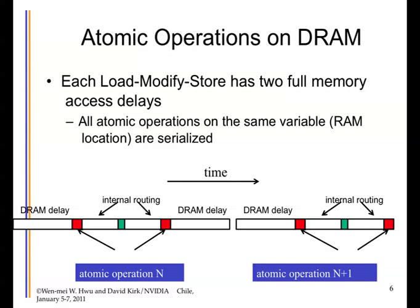In the earliest GPU hardware, atomic operations are done in DRAM. Each atomic operation requires a round trip to DRAM — fetching the initial value with DRAM latency, doing the addition, then writing it back out to external DRAM. The DRAM value must go through the DRAM access delay, through the on-chip routing network for the addition, then back out to DRAM. The second operation then comes in. This can be a very, very long process.